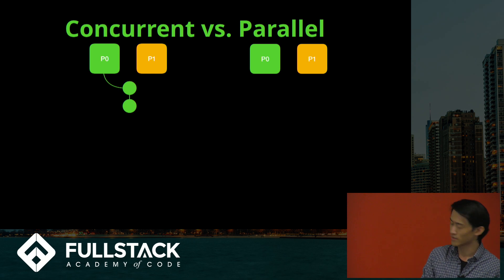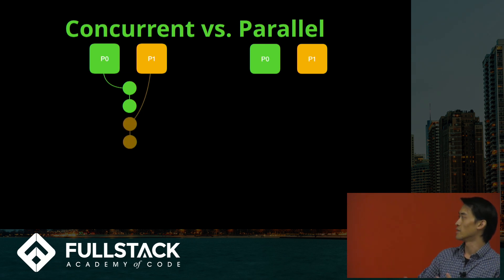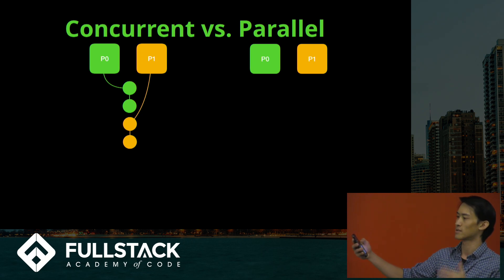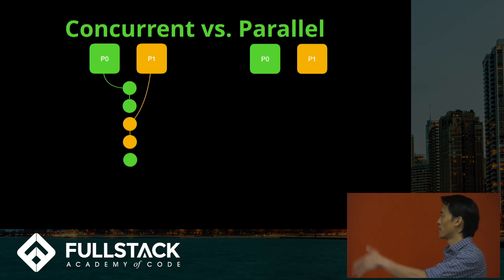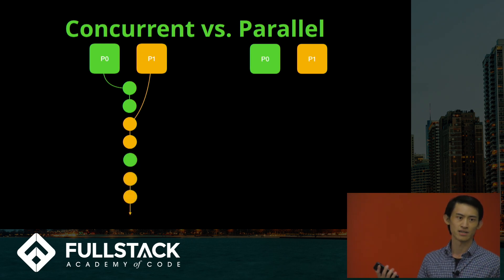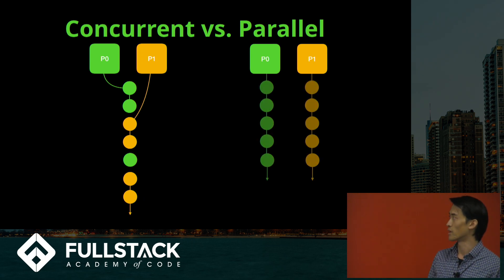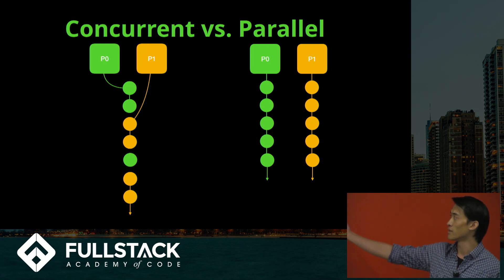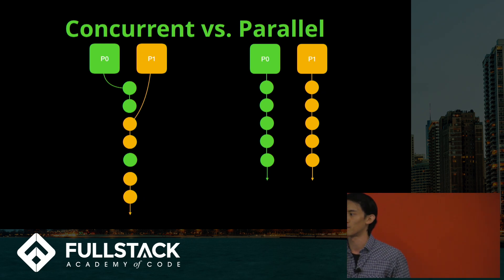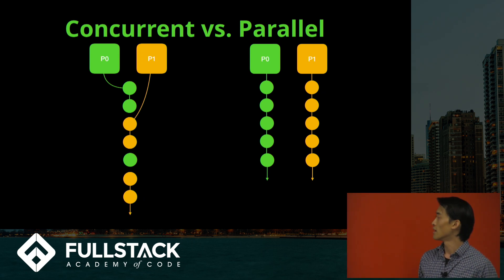These little dots represent instructions for a particular program. With concurrency, the CPU runs the first two instructions of one program, then switches to run the next two of the second program, switching back and forth — and you won't necessarily notice that two programs aren't literally running at the same time. Whereas in parallel, each clock cycle of your CPU is running multiple instructions simultaneously. And these don't even have to be on the same computer — it could be two separate laptops or a cluster of servers. That's the way it's been done for a long time: you just buy more computers, more servers.